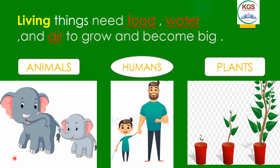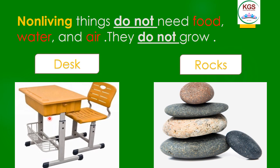How about non-living things? Non-living things are the opposite of living things, because non-living things don't need food, water, and air. They don't grow. Please repeat after me: non-living things don't need food, water, and air — they don't grow.